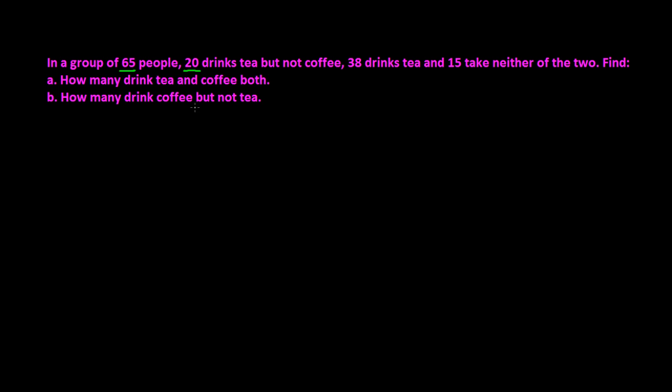To solve this type of problem, first you need to understand what the question is saying and write all the given information. Once you write all the given information, try to represent it in the Venn diagram. Once you draw the Venn diagram, you'll understand exactly what the question is saying, and after that you can easily go to the solution.